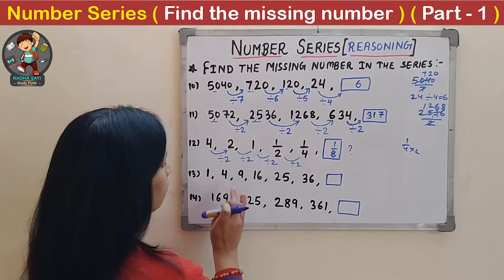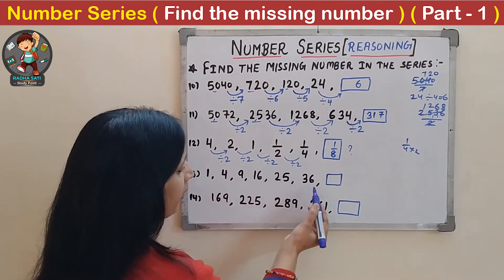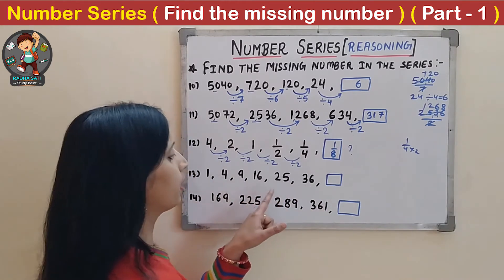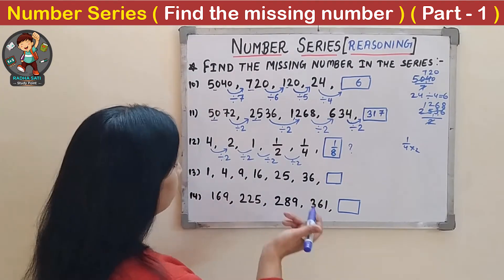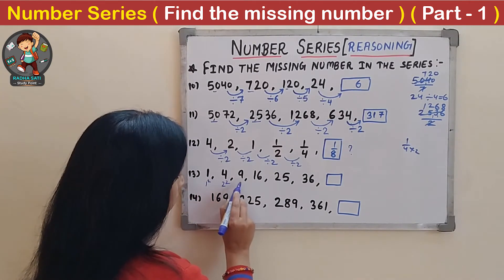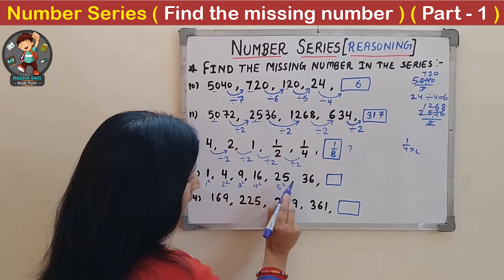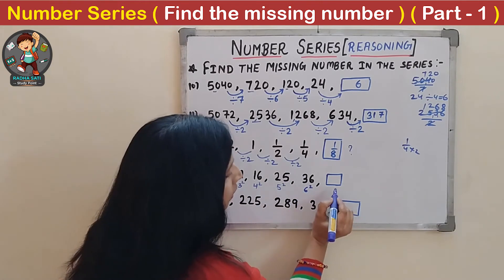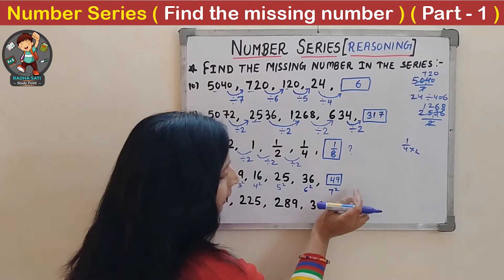Thirteenth question: 1, 4, 9, 16, 25, 36, _. If you know squares of numbers, you can easily recognize this pattern: 1²=1, 2²=4, 3²=9, 4²=16, 5²=25, 6²=36. The next will be 7²=49.